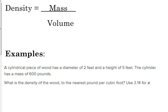They're going to ask you to do a little bit more work, like in this first example. They tell you that a cylindrical piece of wood has a diameter of 2 feet and a height of 5 feet, and it has a mass of 600 pounds. What is the density of the wood to the nearest pound per cubic foot? Use 3.14 for pi. So to find density, we've got to know the mass. They give us the mass, and we've got to know the volume. They don't give us the volume, but they give us everything that we need to find the volume.